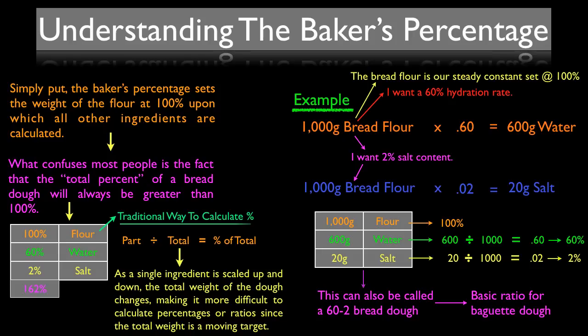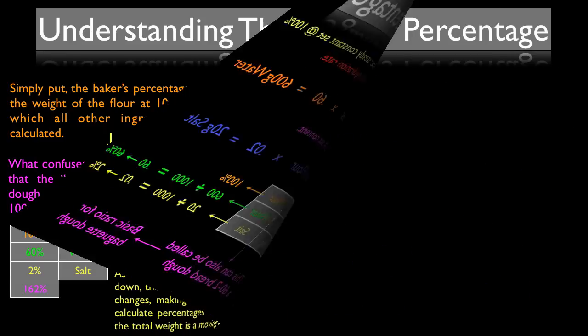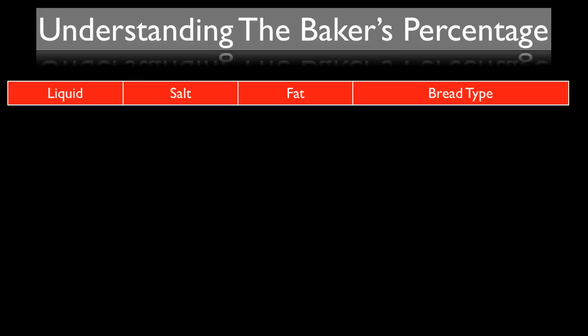To put this into further perspective, let's look at a quick chart. I omitted the flour because it's always at 100% no matter what. We have liquid, salt, and fat. These three main ingredients, besides yeast, which is based on the time you want your bread to rise and proof, will create a numerous amount of different types of bread at different ratios.